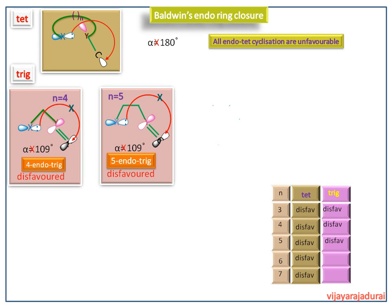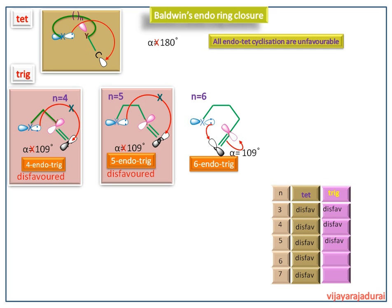For N equal to 6, the chain tethers somewhat closer to the nucleophile, bringing the attack angle closer to 109 degrees. So the nucleophile can attack the electrophilic carbon atom and the molecule undergoes cyclization. For N equal to 7, it is also a favorable reaction.